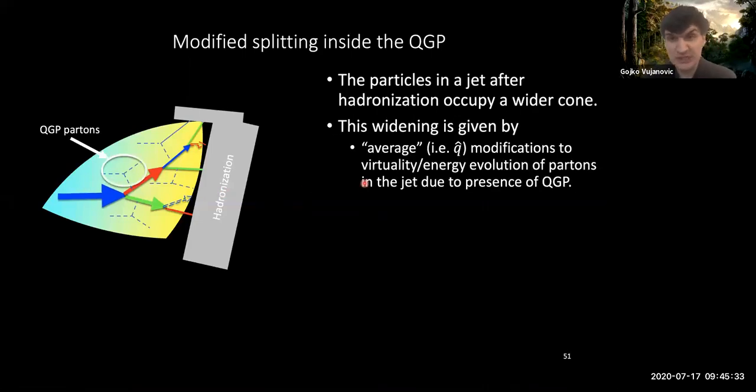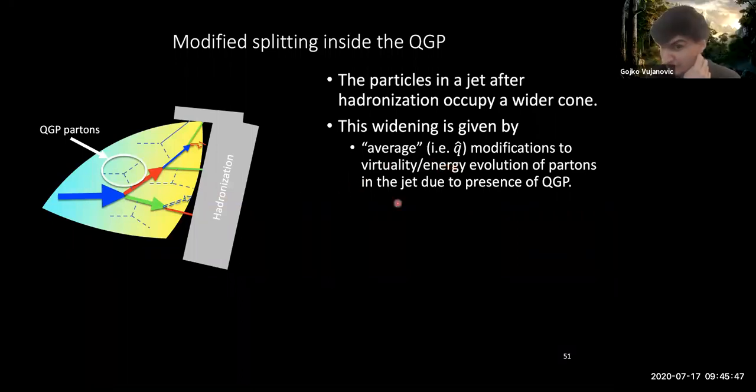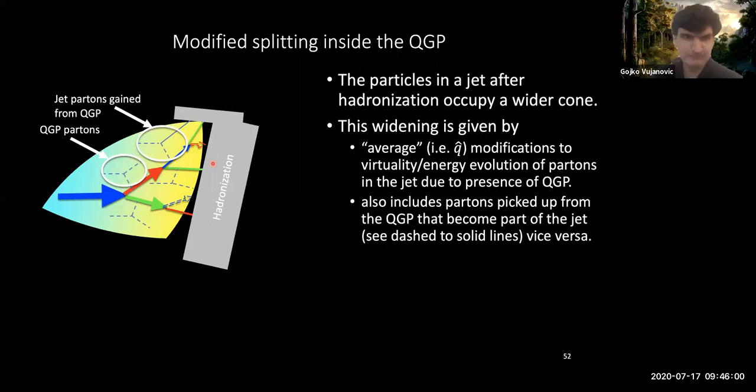So this is due to two things. First, it is due, of course, to Q hat, which is essentially in a sense giving you like an average modification to the virtuality of the jet due to the presence of the quark-gluon plasma. I say average in here because you don't actually keep track in the Q hat formula of where the individual partons in the QGP are. Okay.